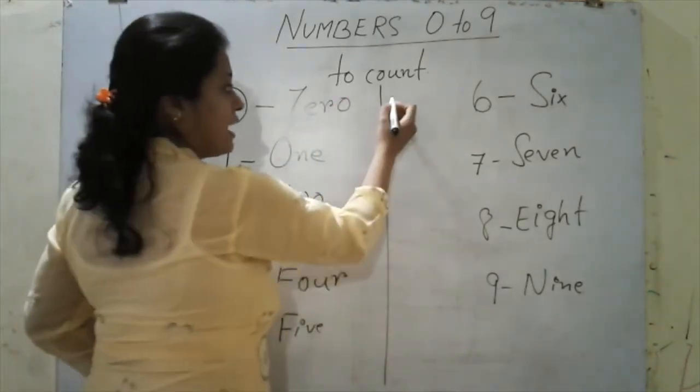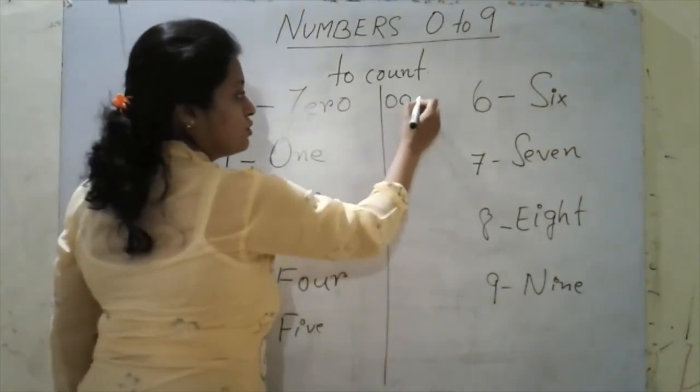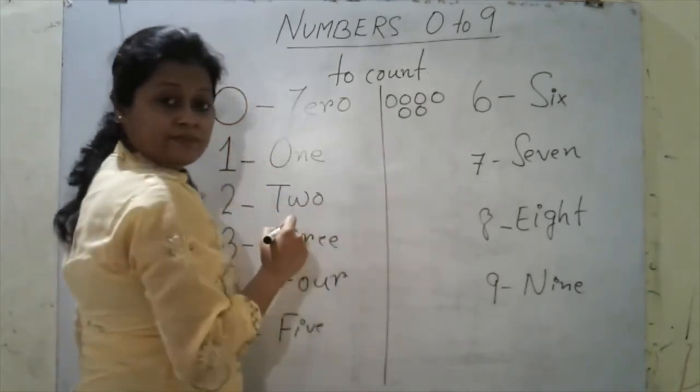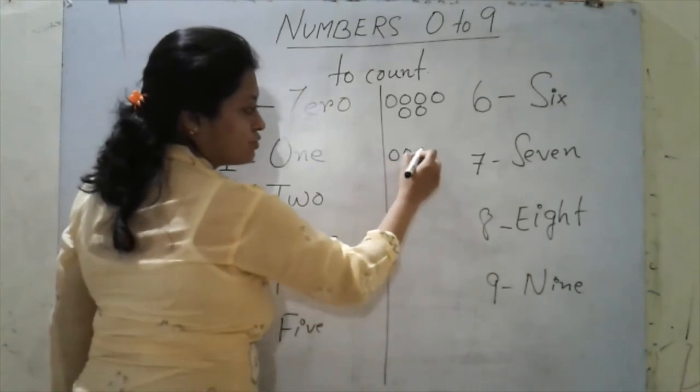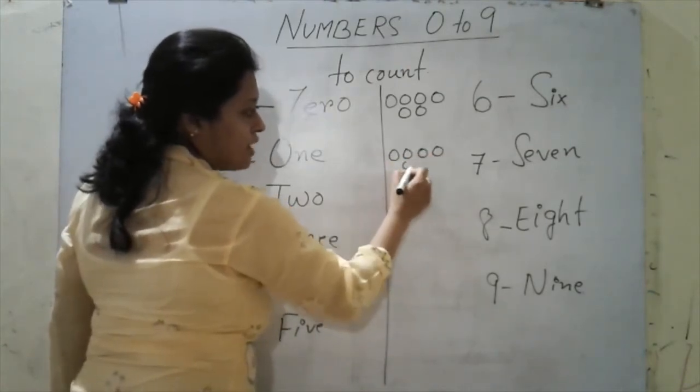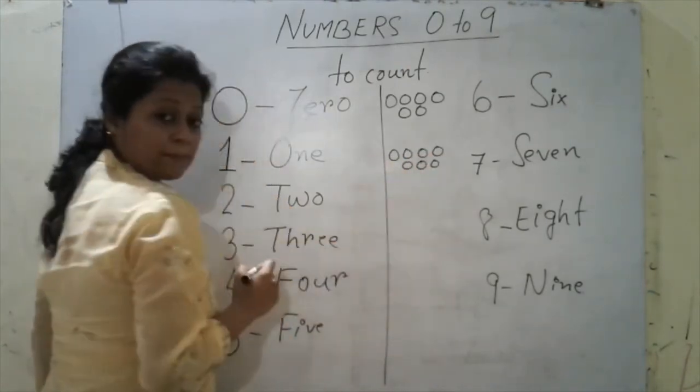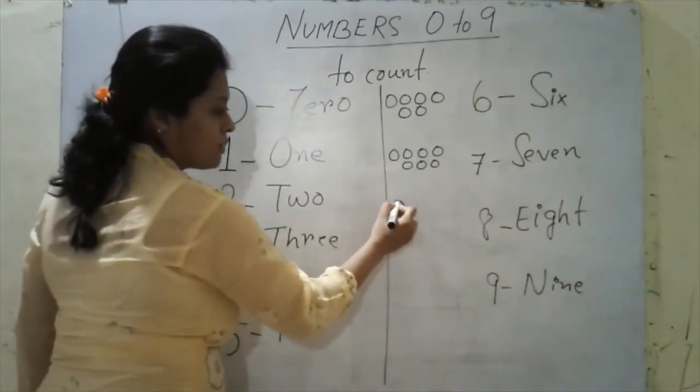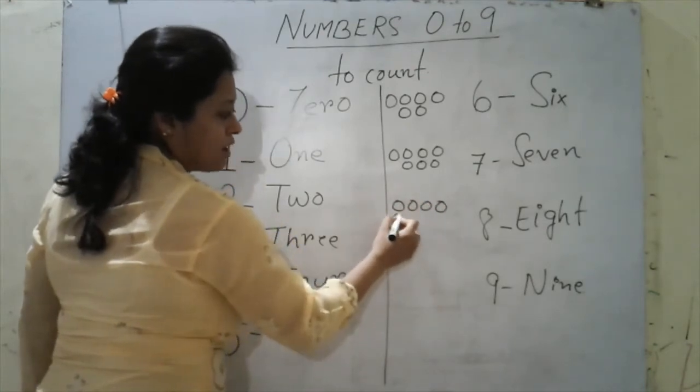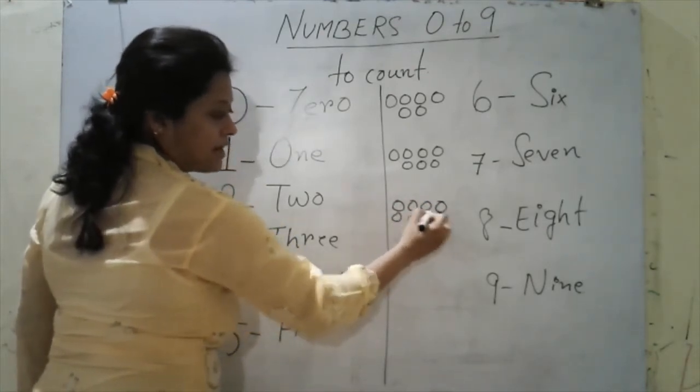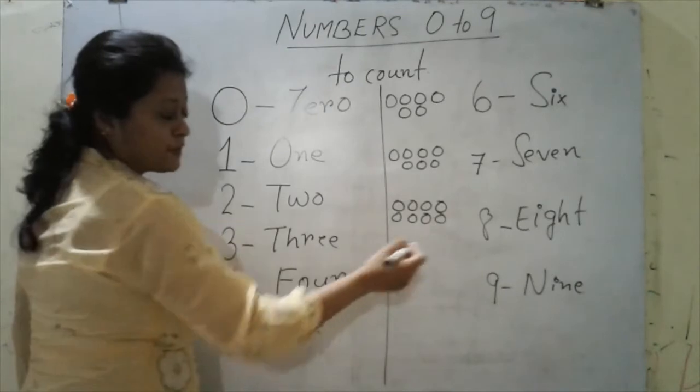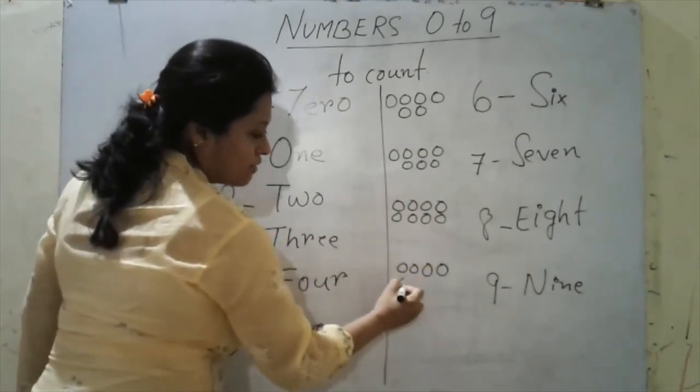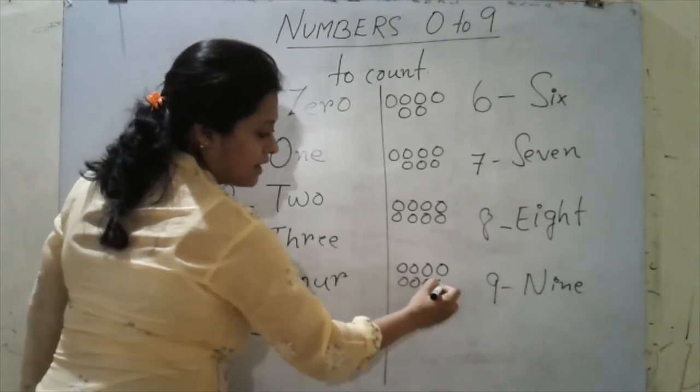For six, I will have one, two, three, four, five and six. For seven, one, two, three, four, five, six, seven. For eight, one, two, three, four, five, six, seven, eight. For nine, one, two, three, four, five, six, seven, eight and nine.